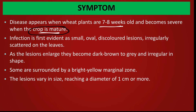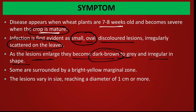Infection is first evident as small, oval, discolored lesions irregularly scattered on the leaves — small oval grey or brown spots appear on the leaves. As the lesions enlarge, they become dark brown to grey and irregular in shape. Some lesions are surrounded by a bright yellow margin. The lesions vary in size, reaching a diameter up to 1 cm.